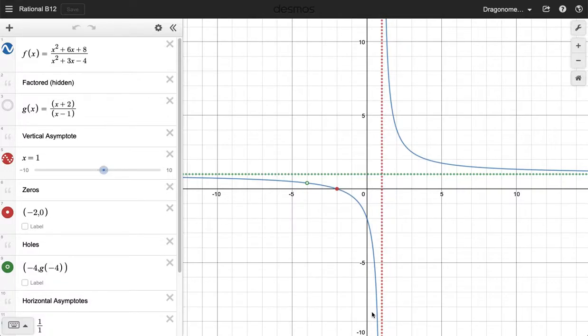Of the graphs of rational functions, particularly their vertical asymptotes, horizontal asymptotes, zeros, and holes.